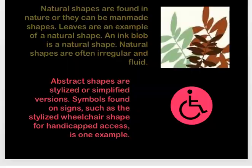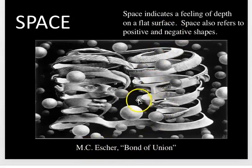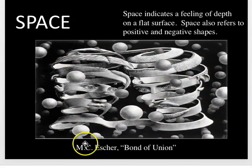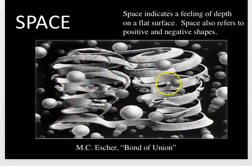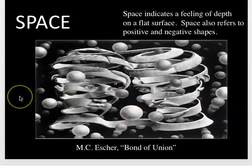Space has to do with depth. When we look at this work by M.C. Escher, we can see things in the foreground and little things in the background. He liked crowded space in his work. This is called Bond of Union, and he plays with positive and negative space — it's all connected but continues on, where what you think is almost the same as what your partner thinks. Space can involve overlapping, bigger things in front, smaller things in back — all related to depth and space.